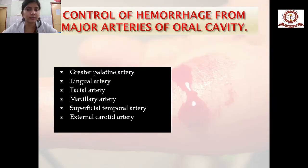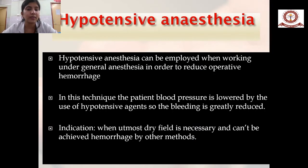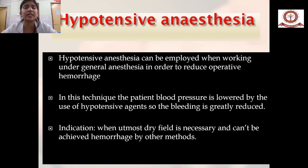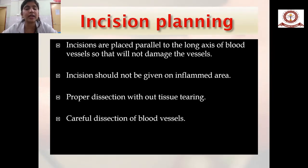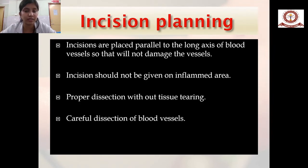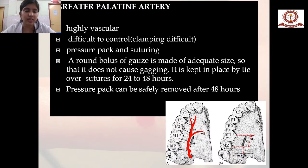The tips of hemostats should be applied above and below the bleeding point; the end is twisted a couple of times around the blood vessel before removing it. Major arteries encountered in oral and maxillofacial surgery include the greater palatine, lingual, facial, maxillary, superficial temporal, and carotid arteries. When ligating these arteries, hypotensive anaesthesia is employed under general anaesthesia to reduce operative bleeding by lowering blood pressure. Incisions should be placed parallel to the long axis of the blood vessel, not on inflamed areas, with careful dissection to prevent hemorrhage.